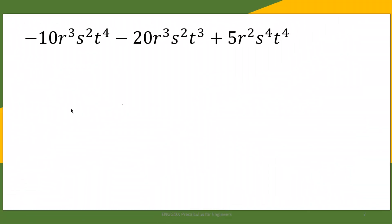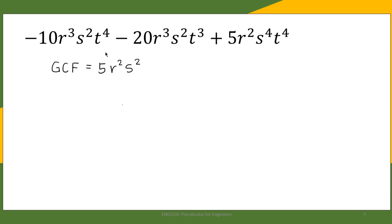Let us take a look at another example — a polynomial with three terms, each consisting of a constant and three variables. First, let us look at the constants: negative 10, negative 20, and positive 5. The greatest common factor of the coefficients is 5. For R, we have R³, R³, R² — so the GCF is R². For S, we have S², S², S⁴ — so the GCF is S². For T, we have T⁴, T³, T⁴ — so the GCF is T³. Therefore, the overall GCF is 5R²S²T³.